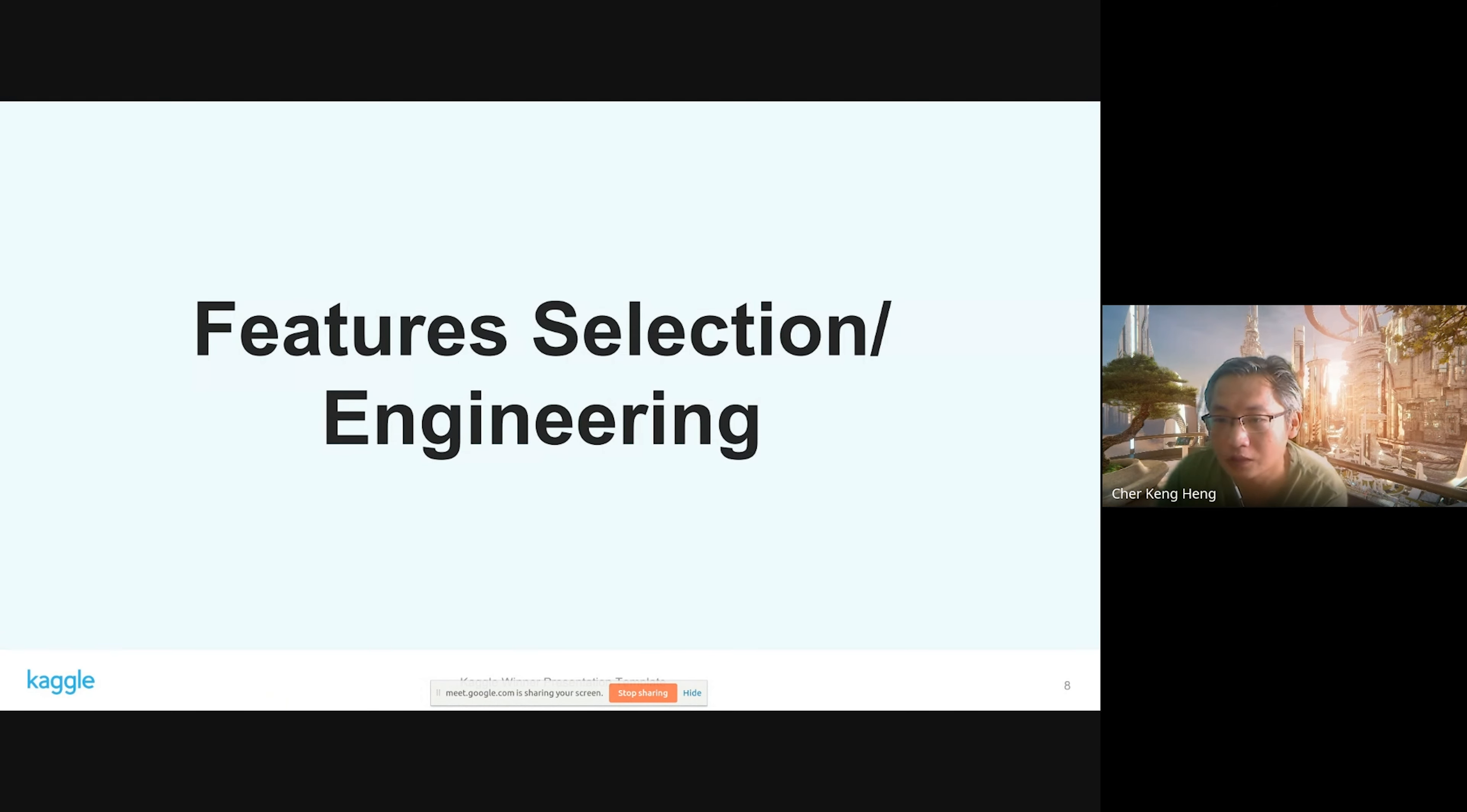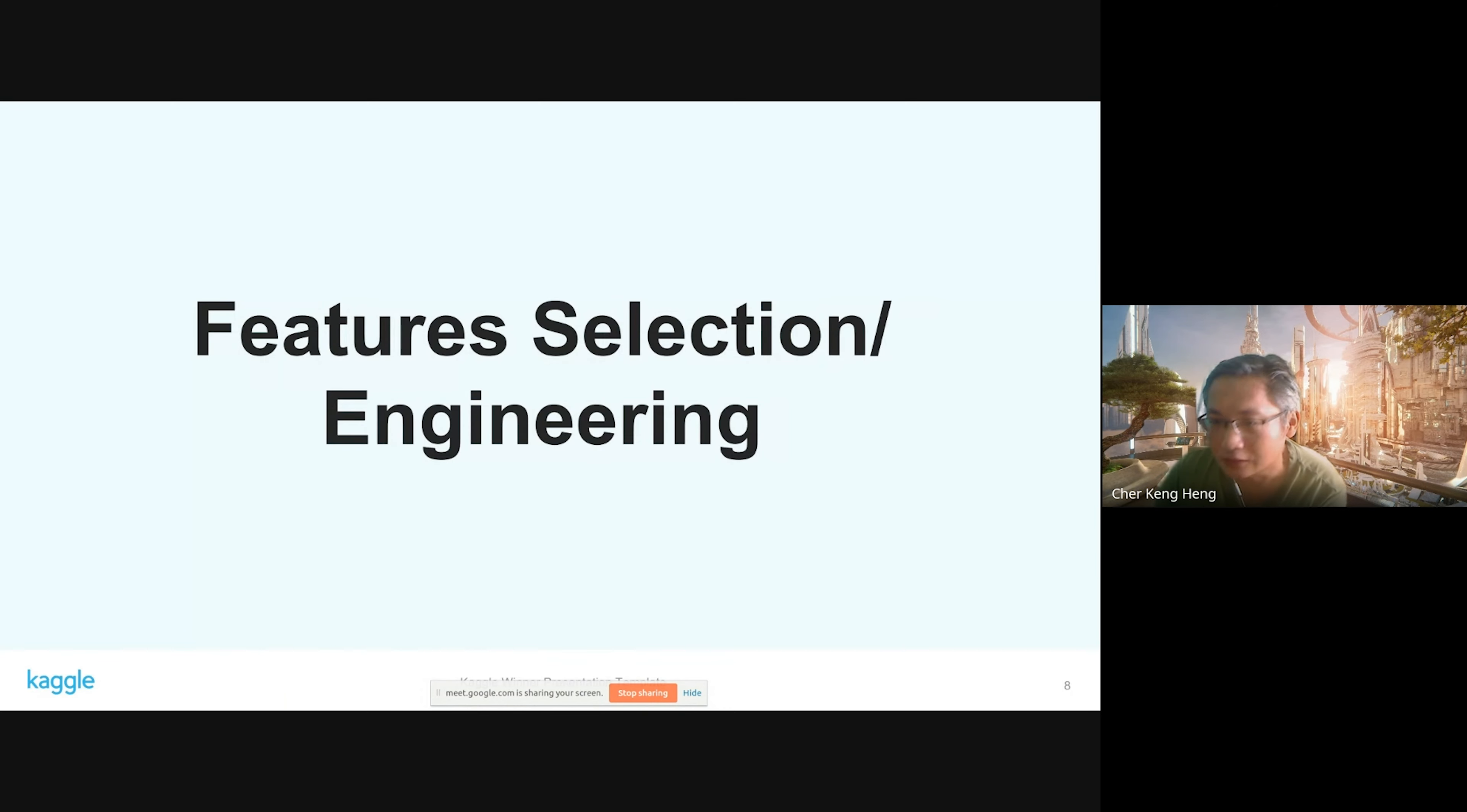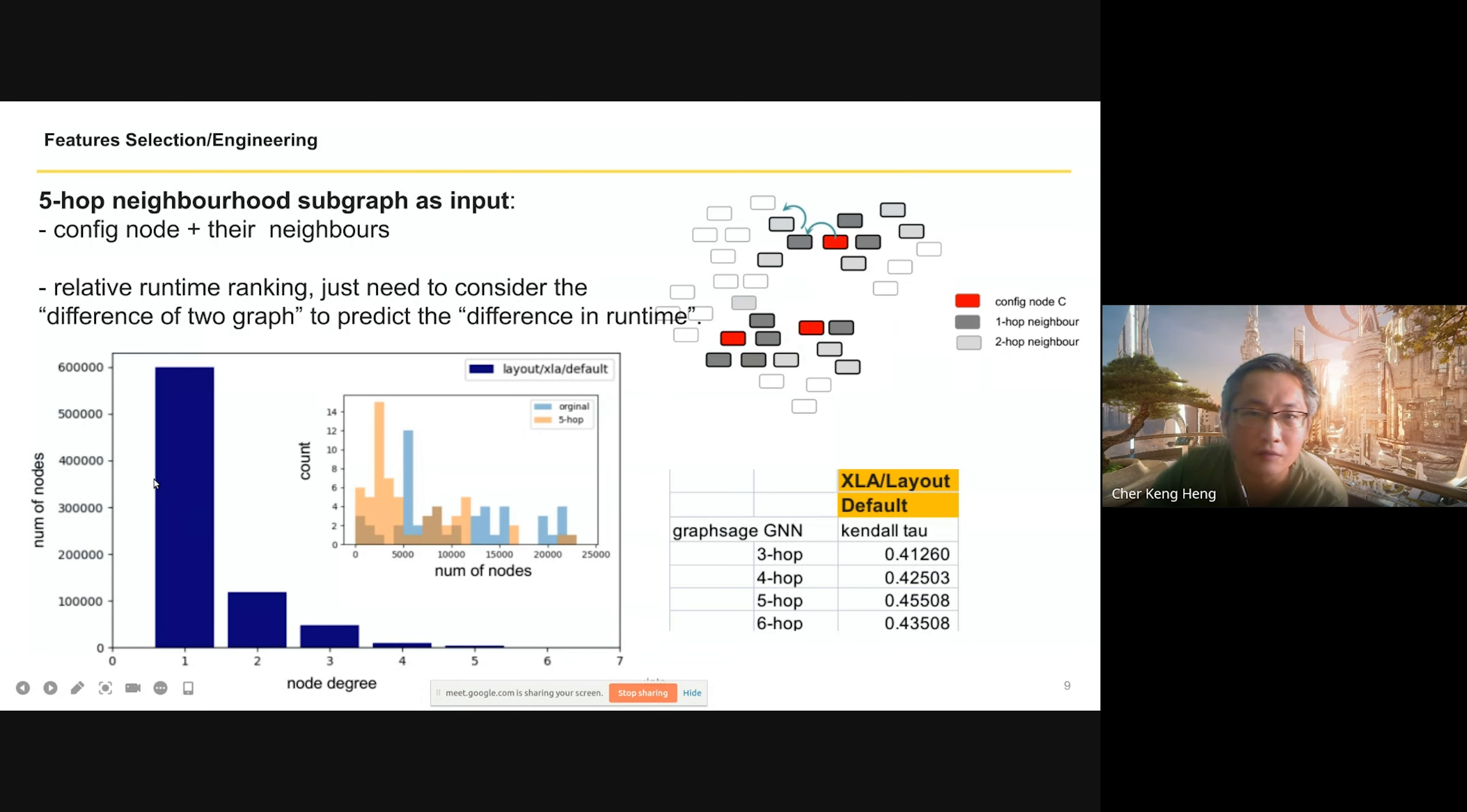For feature selection and engineering, why I choose a five-hop neighborhood is because I studied the node degree of the nodes in the graph, which means the number of neighbors. Most of them have about five neighbors. I also realized we're not predicting the runtime, we're actually predicting the relative runtime. Maybe we don't need the whole graph but just the difference between the two graphs.